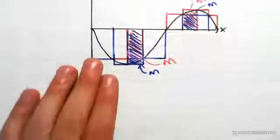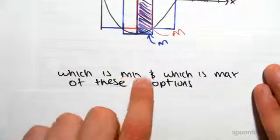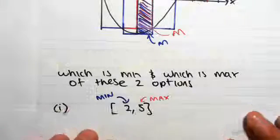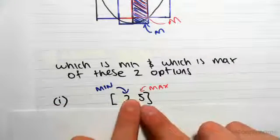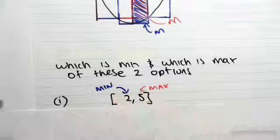So the way to think of this, just to provide a bit of background, is which is minimum and which is maximum of these two options. So let's say we had 2 and 5. 5 is obviously maximum and 2 is minimum, that's obvious. 5 is a bigger number than 2.